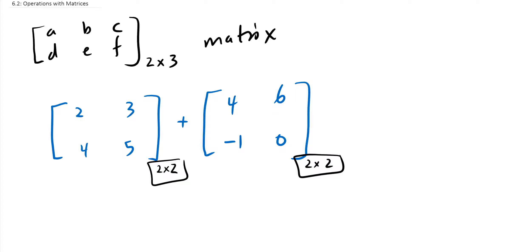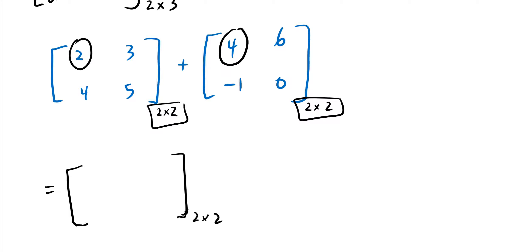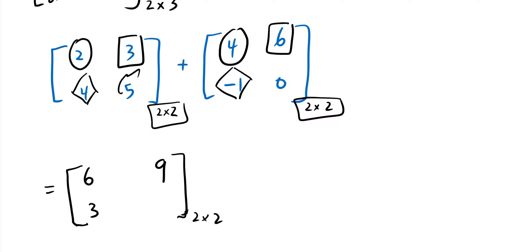As long as the dimensions match, we can add the matrices. The result will be the same size — two-by-two in this case. To find each entry, you simply add the corresponding entries from each matrix: 2+4=6, 3+6=9, 4+(-1)=3, and 5+0=5. It's a very straightforward process to add matrices.